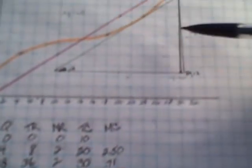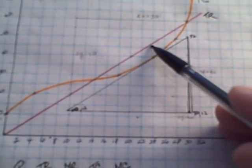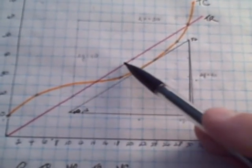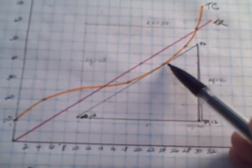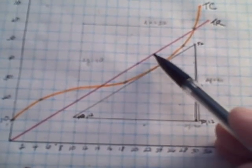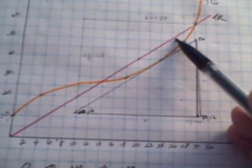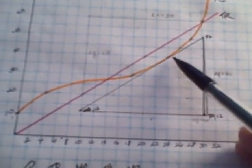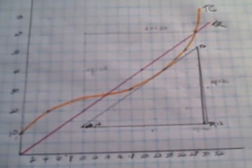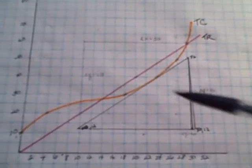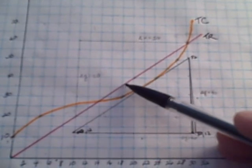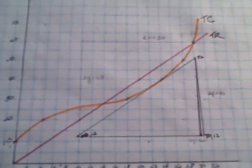This is why economists say marginal revenue equals marginal cost is the profit maximization point—because they're simply taking the rate of change of this and the rate of change of this and equating them. That concludes today's video. Tomorrow I'd like to show this on the graph that's used in your textbook.